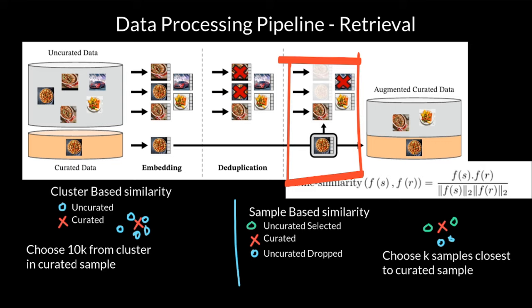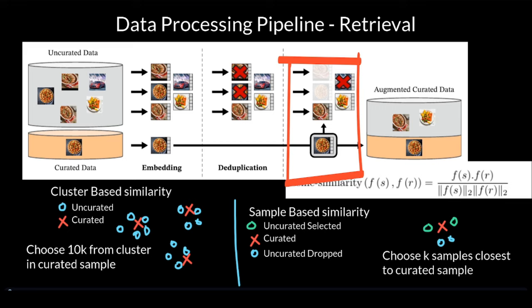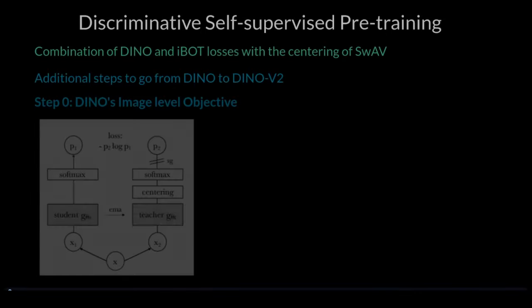Then there's cluster-based retrieval, where they cluster the uncurated data into different clusters, and from each cluster they sample 10,000 images and discard the rest. After doing these steps, by the end of the retrieval process, the resulting dataset had 142 million images — resulting in the LVD-142M dataset.